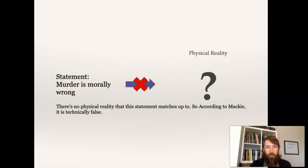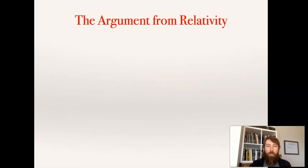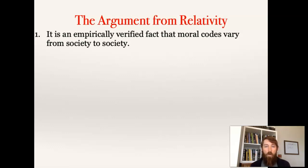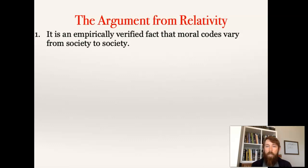So why would he say something like this? He's got a couple of arguments in his paper on the subjectivity of values. The first one we can call the argument from relativity, and it's based on the fact that moral codes vary — they vary from society to society and from time period to time period. Mackie thinks that this is just empirically verified. All we have to do is make some observations, and we'll see that moral codes vary from the southeastern United States to places in Asia or Africa, or even within the United States.